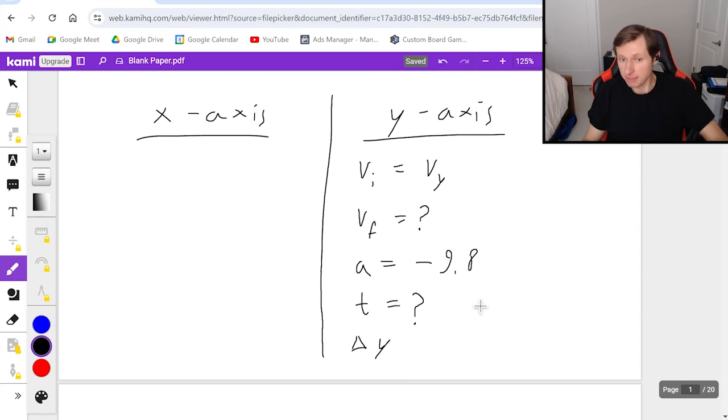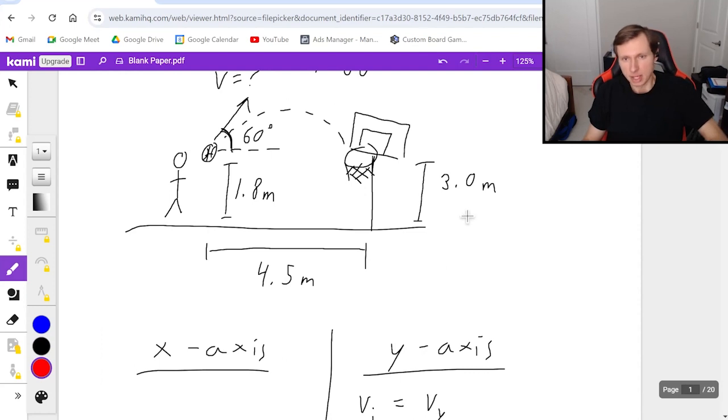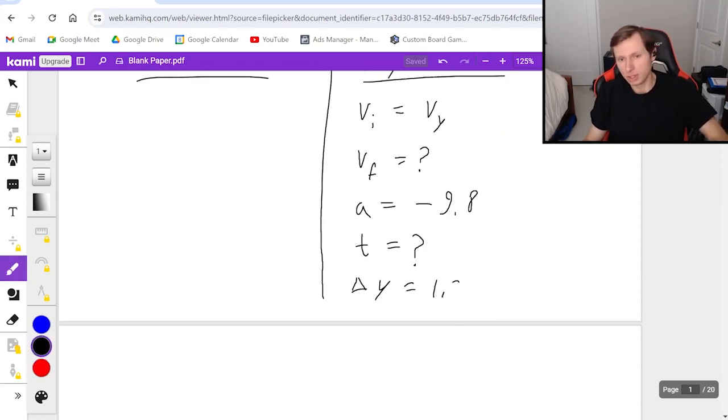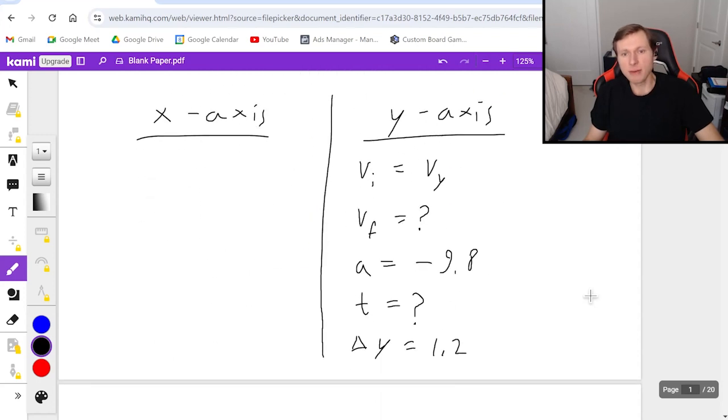So delta y is by definition final height minus initial height. If I go back to my picture, this is my final height, the 3 meters. This is my initial height, the 1.8 meters. So if I do delta y final minus initial, it's 3 minus 1.8. I'm gonna get positive 1.2 as my delta y. If I was going lower it would be negative 1.2, but I am going higher because the basket's above the ball. Maybe the picture is not great but it is going up 1.2 meters.